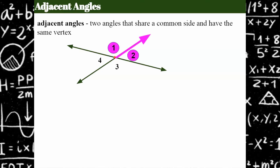Here are two examples. Angles one and two are adjacent because they have the same vertex and they share a ray as a common side. Angle one is made up of these two rays and angle two these two rays, and they share this side. So they are adjacent.